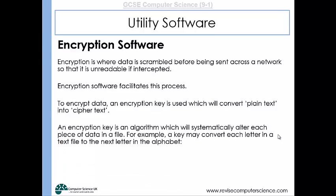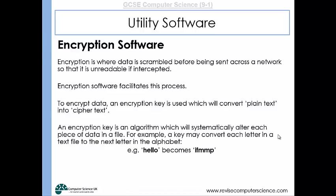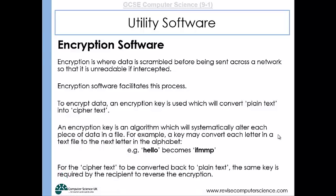An encryption key is an algorithm that systematically alters each piece of data in a file. For example, a key may convert each character in a text file to the next letter in the alphabet — so 'hello' becomes 'ifmmp'. For the cipher text to be converted back to plain text, the same key is required by the recipient to reverse the encryption.